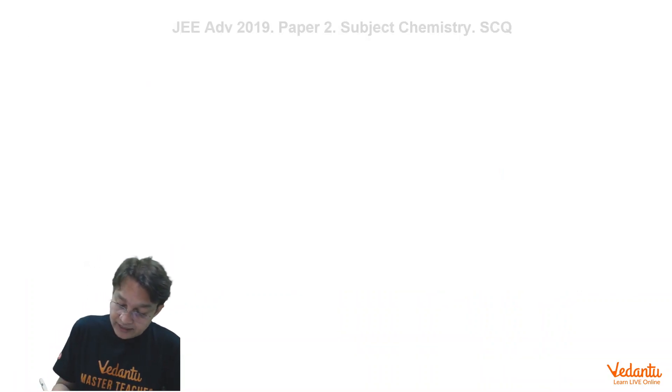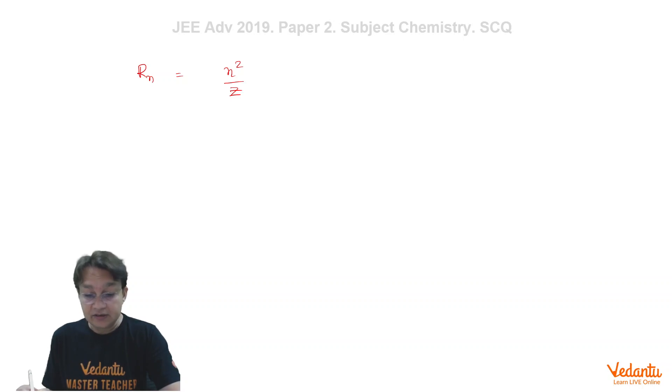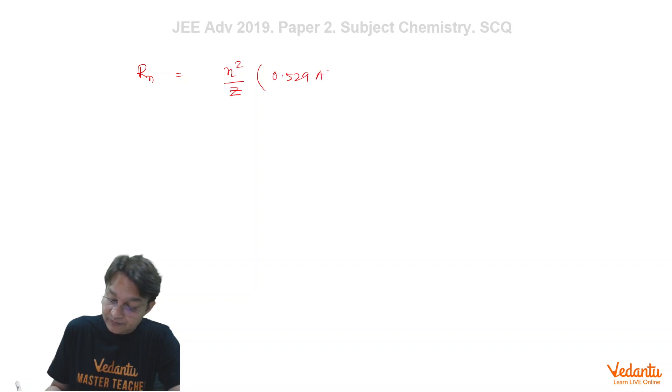We know that in hydrogen like species radius in nth orbit is given by n square upon Z and that is multiplied by a constant which is 0.529 angstrom. This result you mostly remember.